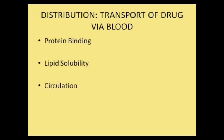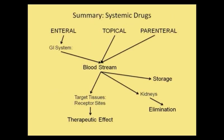We are going to talk about the drug that is already in the bloodstream. The first factor is protein binding — if the drug is bound by protein, it is not available to treat the body. Lipid solubility: cell membranes have high lipid concentration, so drugs with high lipid solubility pass more easily through cell membranes. Circulation: medication depends on circulation to reach the target tissue. Factors include blood volume, vascular resistance, and cardiac output.